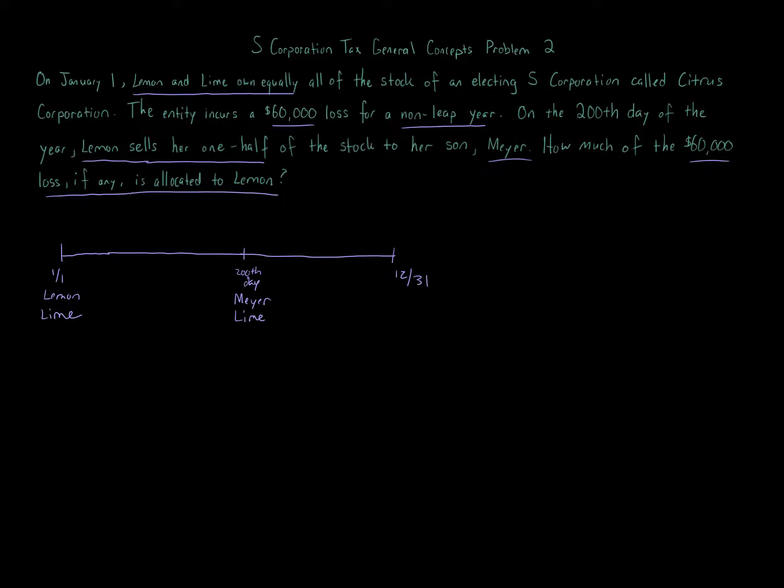It does make a difference in tax and leap years. All we're doing is the S corporation has $60,000 of loss during the year and we want to know how we allocate that to Lemon. S corporations, the S stands for small business. I also like to think of the S as simple. There's simple rules.